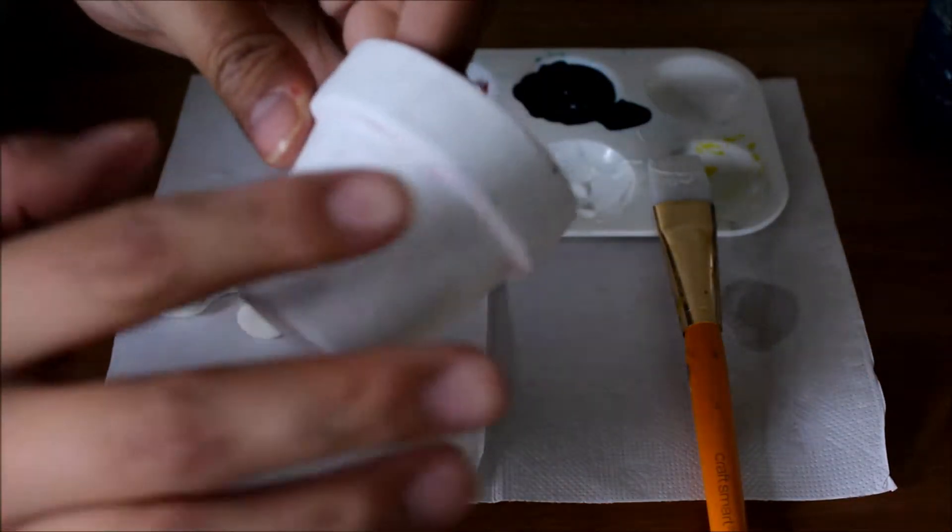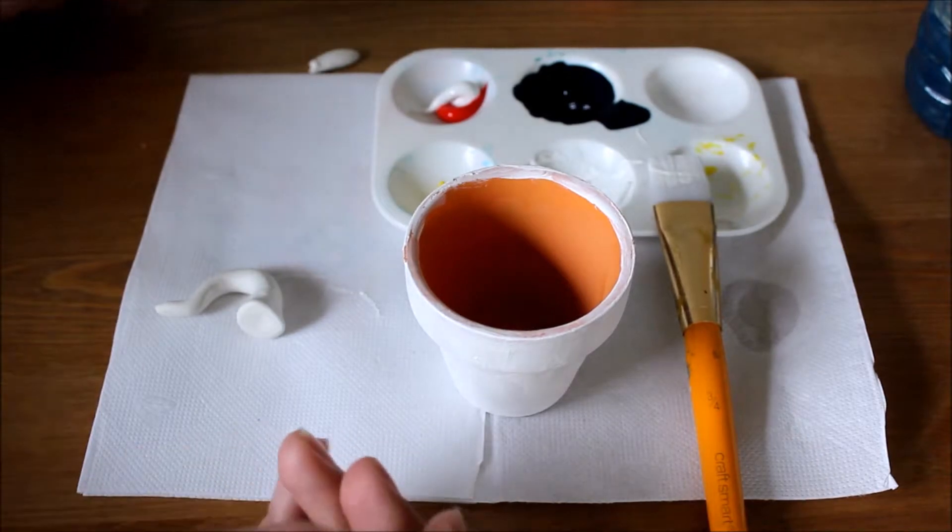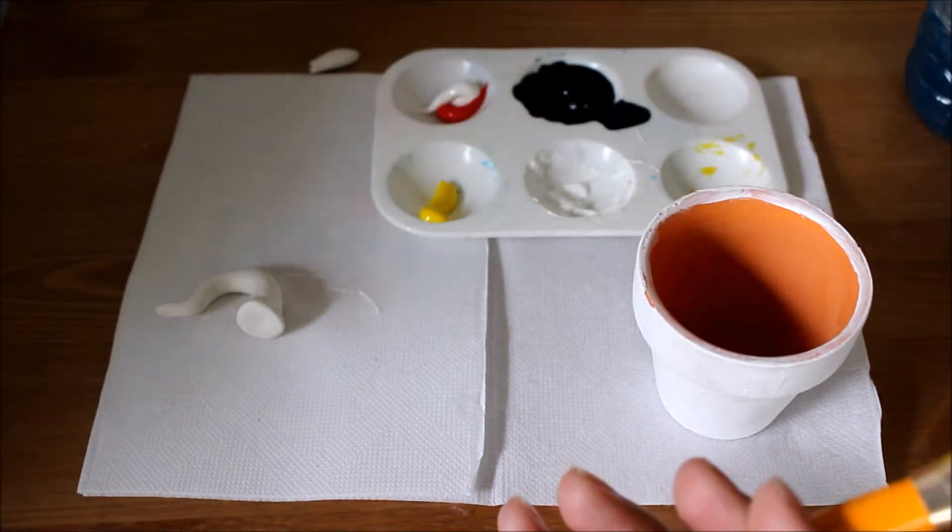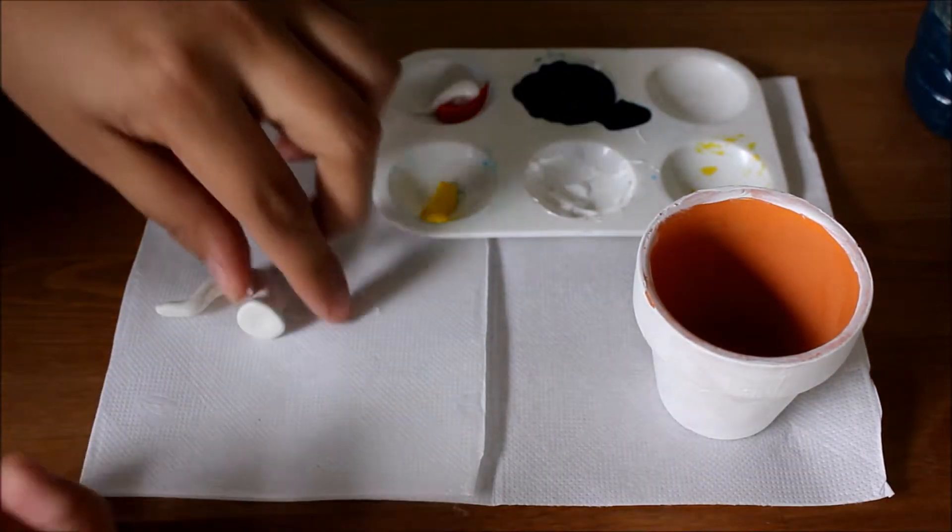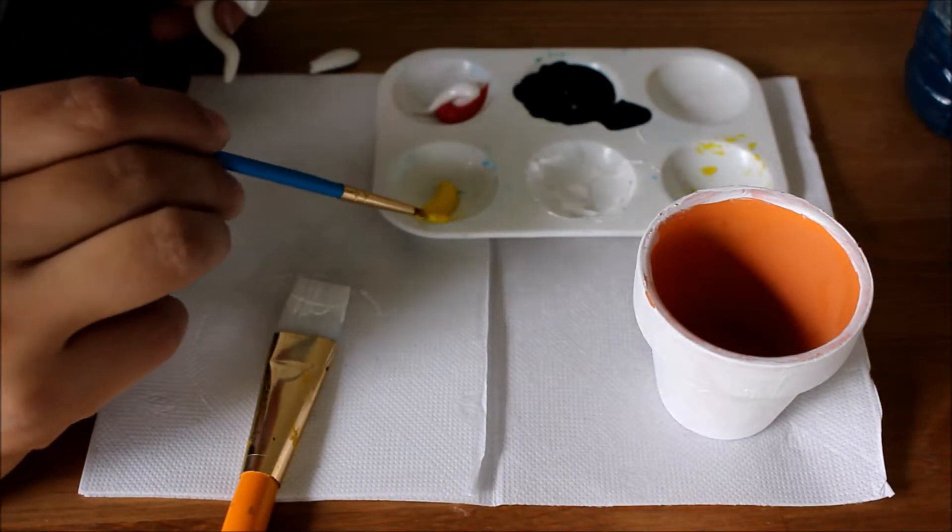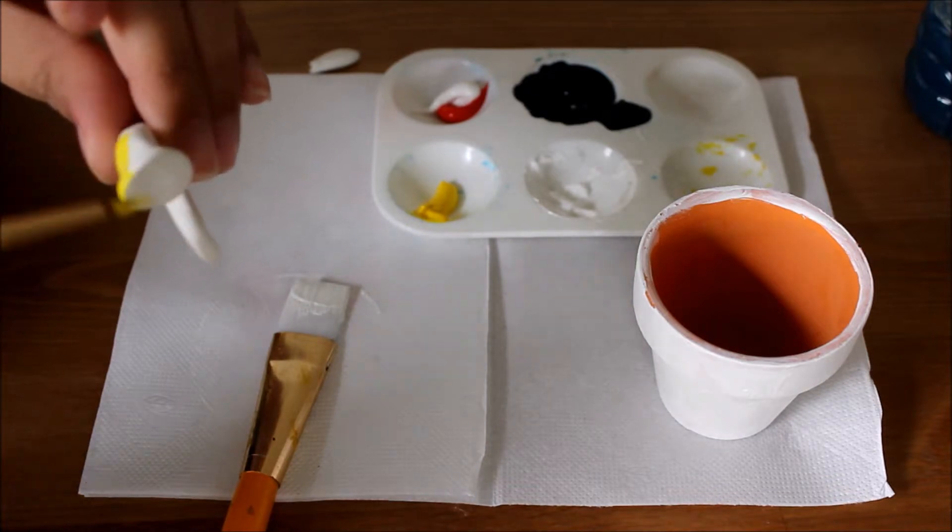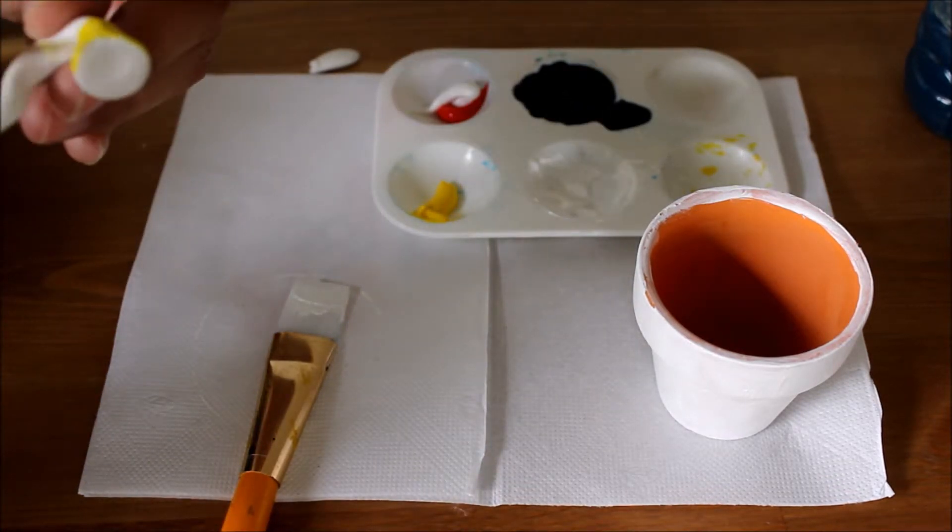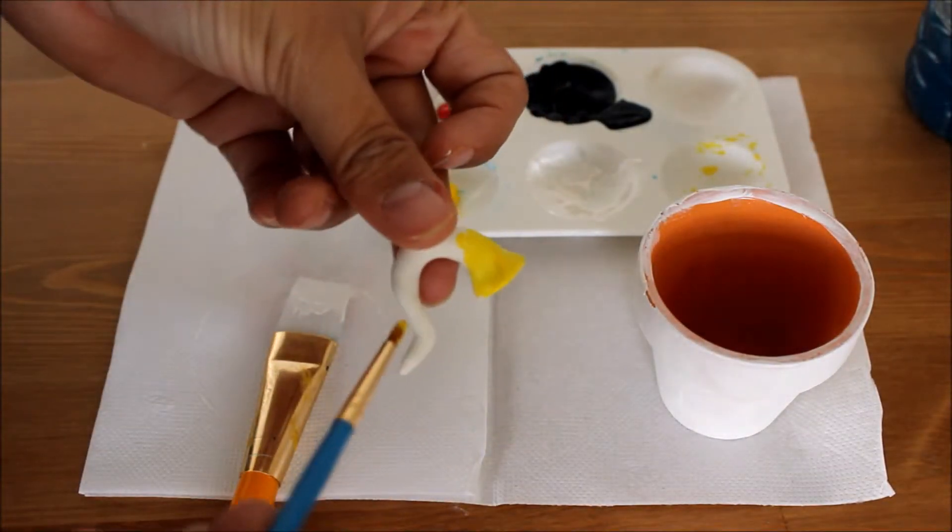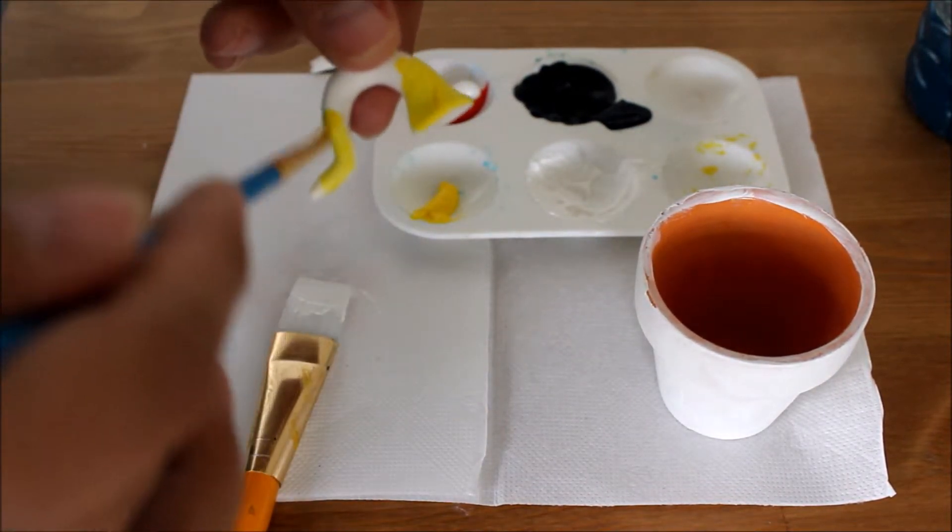All right, so once your pot, your flower pot is dry and you've applied the layers that you feel more comfortable with, we're ready to move on to the next step. So what we have here are the colors. What I'm gonna do first is I'm gonna paint the nose yellow. So we just grab a little bit of yellow and we just start painting it. And the same thing applies: go ahead and put as much coatings you feel comfortable with. Just go ahead, the layers that you feel more comfortable with, go ahead and apply it and then you just continue it.